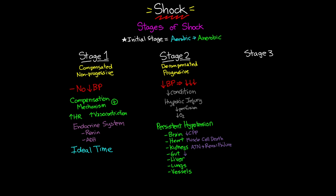In the gut, decreased or absent peristalsis can lead to ileus, ulcers, and even GI bleeding. In the liver, a condition often called shock liver develops — essentially an acute hepatic failure. In the lungs, in addition to direct hypoperfusion damage, one result of this cascading process is increased capillary permeability.